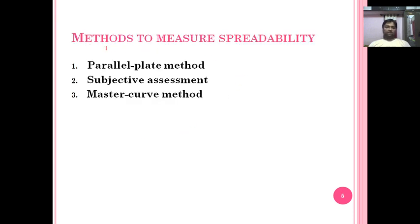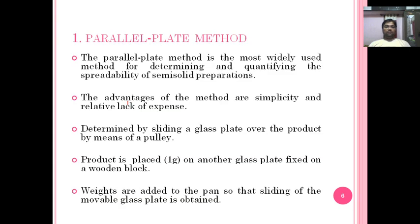There are three methods to evaluate spreadability: the parallel plate method, subjective assessment, and the master curve method. The parallel plate method is the most widely used method for determination and quantification of the spreadability of semi-solid preparations.